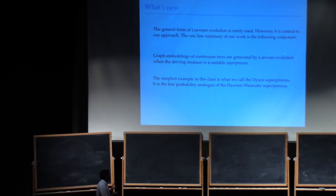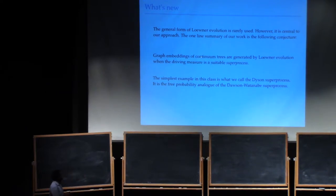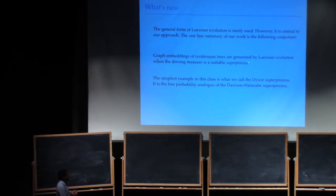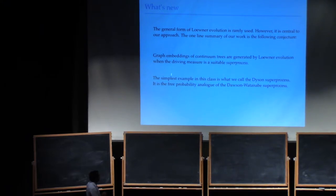There's a one-line summary of our work: graph embeddings of continuum trees are generated by Löwner evolution when the driving measure turns out to be a suitable super process. This is a measure-valued Markov process. These were studied extensively in connection with continuum trees. I'm going to give you an example of the simplest super process in our class, which we call the Dyson super process. The name comes from the connection with Dawson-Watanabe super process, also sometimes called super Brownian motion. We played with calling it super free probability or super free Brownian motion, but I think Dyson super process works better.